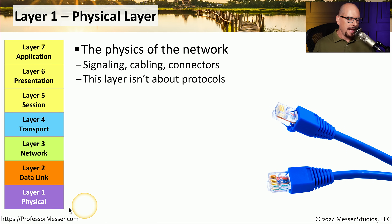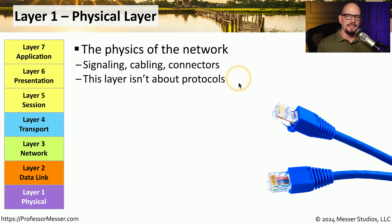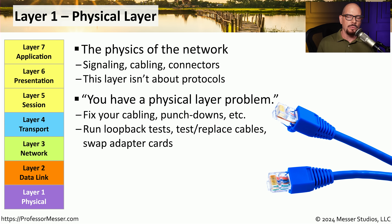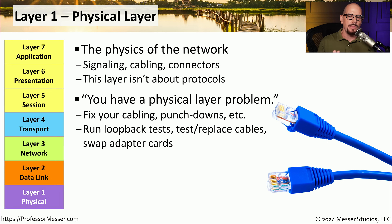Let's start at the bottom with layer 1, the physical layer. It describes the physical signals sent through cables and fibers on our network. At this layer, we don't have many protocols because we're just getting a signal from one part of the network to another. Physical layer problems include bad cables, bad fiber, or wireless interference. Troubleshooting involves running loopback tests, testing cables and fibers, and checking adapter cards.